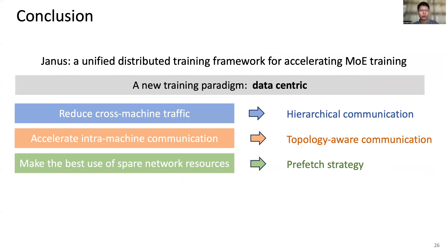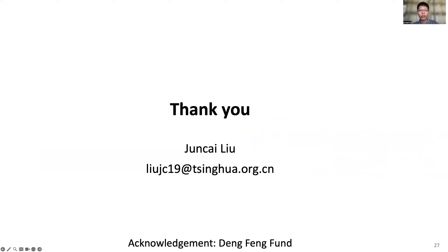To conclude, JANUS is a unified distributed training framework for accelerating distributed MoE training. We propose a new training paradigm, data-centric. In the data-centric paradigm, JANUS reduces cross-machine traffic with hierarchical communication, accelerates intra-machine communication with topology-aware communication, and makes the best use of sparse network resources with a prefetch strategy. Thank you.